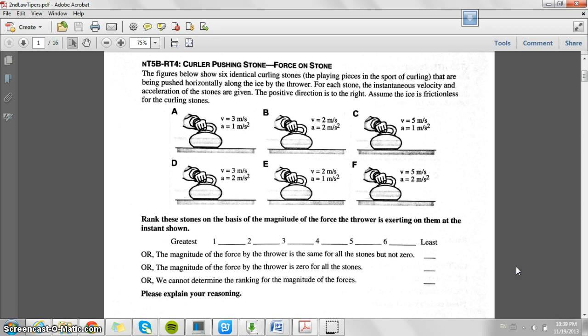That means each of the masses are the same because they're identical. The force diagrams for all of these curling stones would have normal force going upward in one direction and weight going down in the other direction. But because it's only moving horizontally across the ice, the vector lengths would be equal.